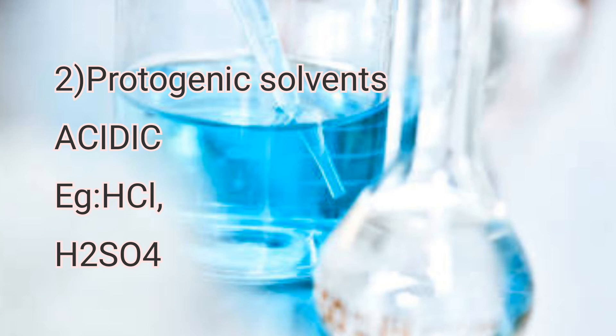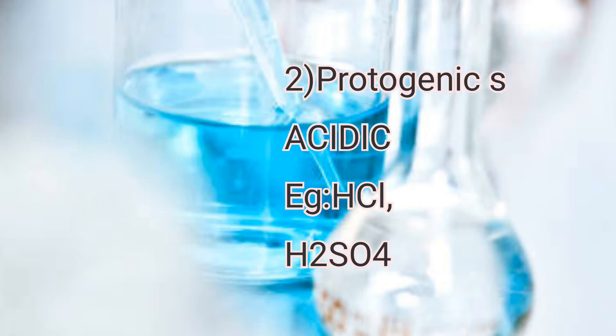The second class is protogenic solvents. They are acidic in nature and can donate a proton. They are used in the determination of very weak bases. Examples are HCl (hydrochloric acid) and H₂SO₄ (sulfuric acid).